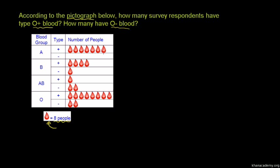So, each one represents 8 people. So there are 56 people with A positive blood. The question asks how many survey respondents have O positive blood. So O positive, O positive, positive. So, no, 1, 2, 3. Let's look: 1, 2, 3, 4, 5, 6, 7, 8.